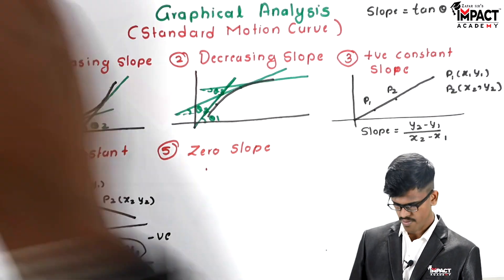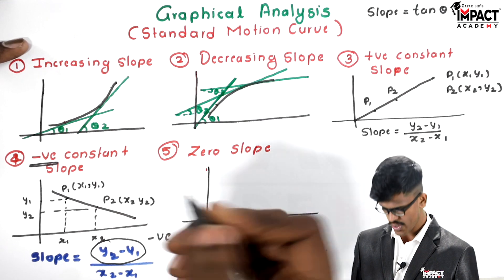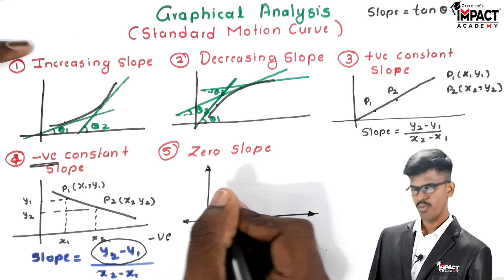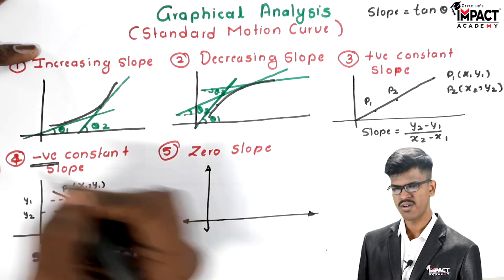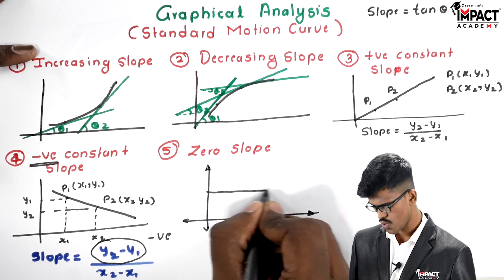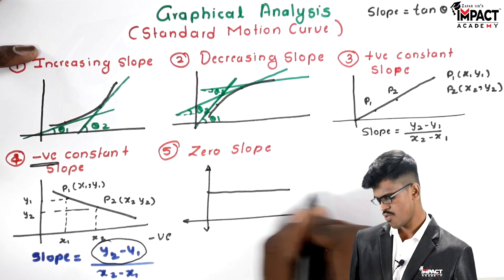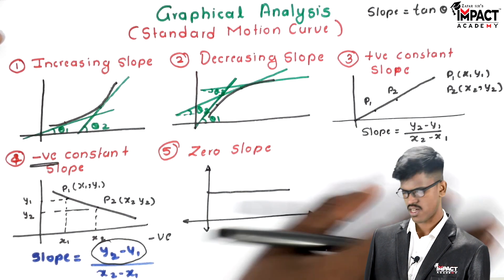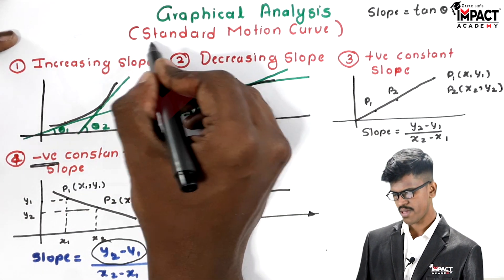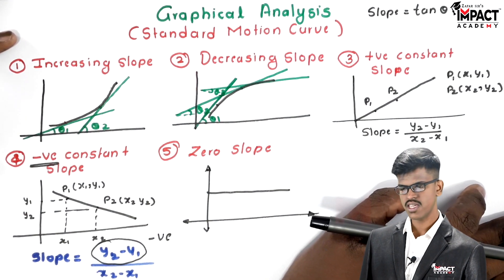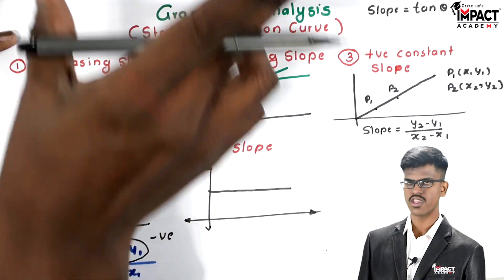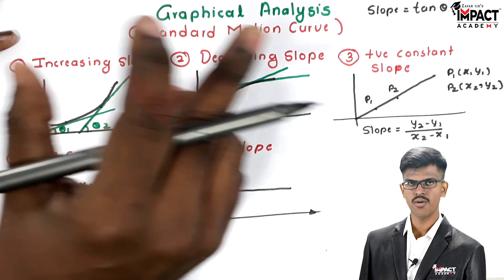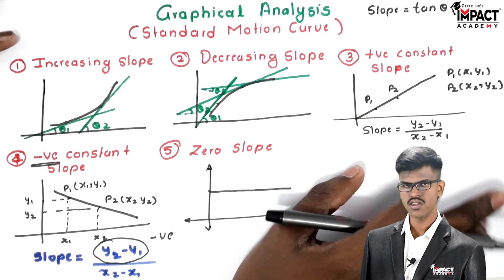Fifth case is zero slope. A line parallel to the x-axis always has a zero slope value. Any line which is parallel to the x-axis is always having zero slope. So we now have basic knowledge about slope. Our main topic is standard motion curves — we will study them for uniform velocity motion, uniform acceleration motion, and variable acceleration motion.